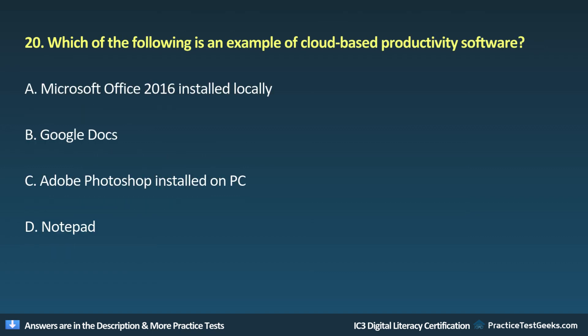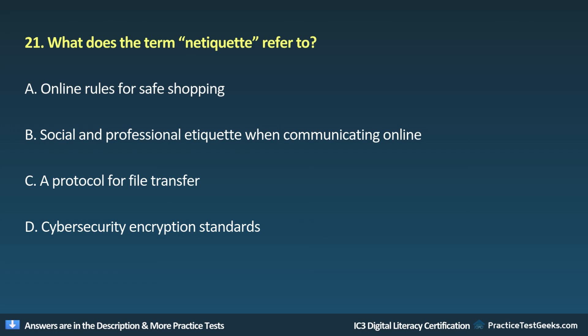Question 20: Which of the following is an example of cloud-based productivity software? A. Microsoft Office 2016 installed locally. B. Google Docs. C. Adobe Photoshop installed on PC. D. Notepad.